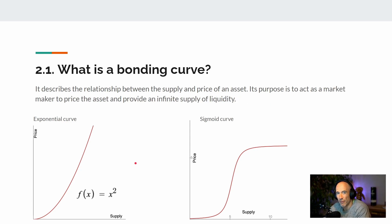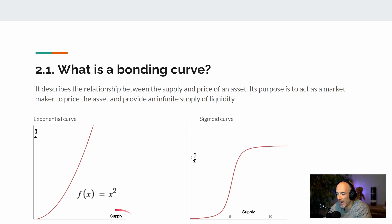Bonding curves come in different shapes and forms. On this slide we can see the exponential curve on the left and the sigmoid curve on the right. Looking at the exponential curve, the higher the supply — meaning the more people are buying from the curve — the higher the exponential growth of the price will be. This means that early adopters pay a much lower price compared to late adopters, who pay a much higher price.